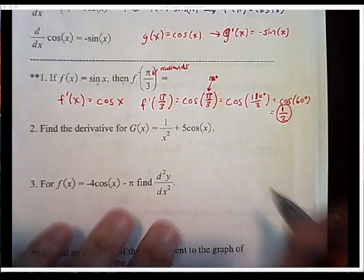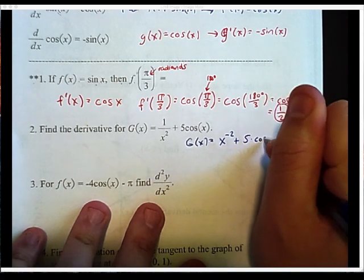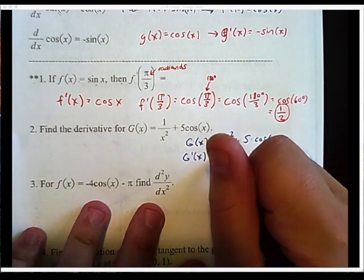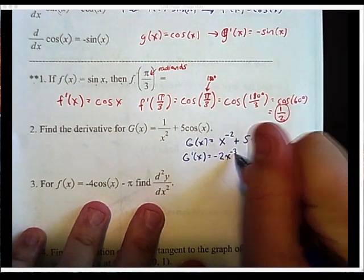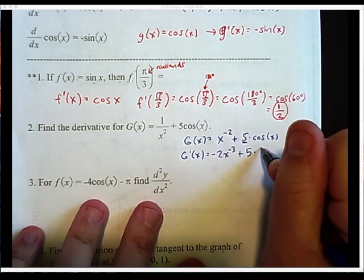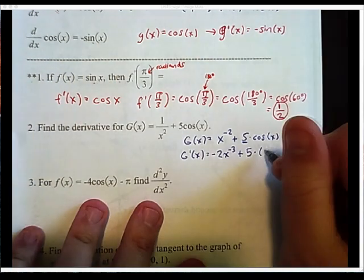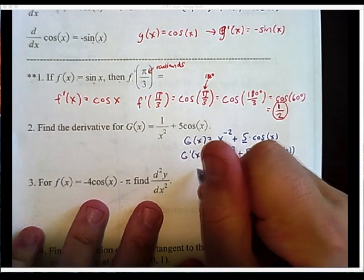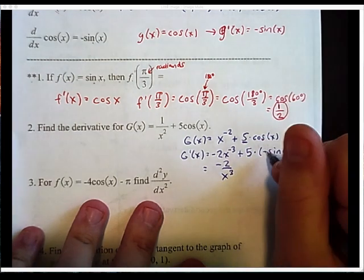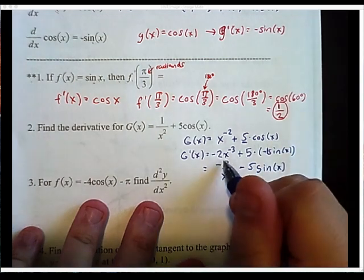Now let's do number 2. We can rewrite g of x: 1 over x squared becomes x to the negative second power, plus 5 times cosine of x. To find the derivative, apply the power rule: negative 2 comes out front and the power reduces to negative 3. For the second term, the coefficient 5 stays, and the derivative of cosine is negative sine. So g prime of x equals negative 2 over x cubed minus 5 sine of x.